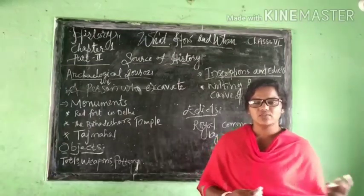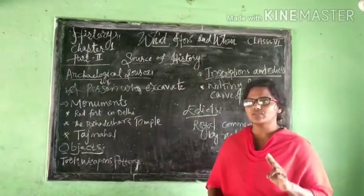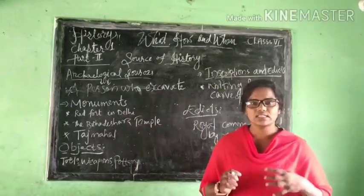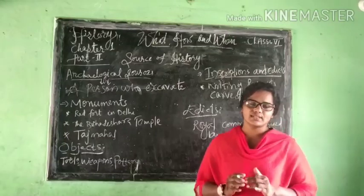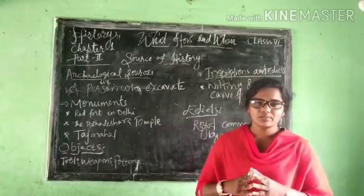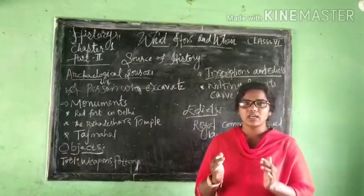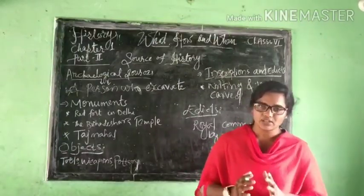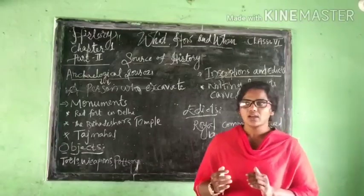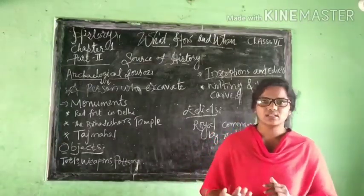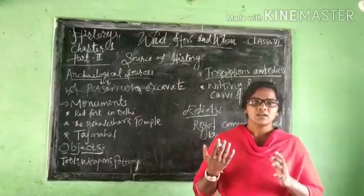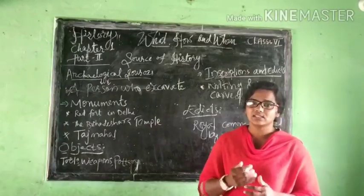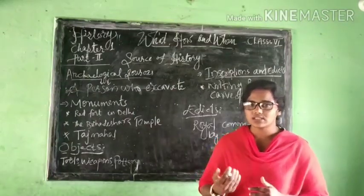How do we study history? We study history in two parts: one is prehistory and history. What is prehistory? Prehistory is the history before the time when reading and writing were invented. History is the record of the time after reading and writing were invented.